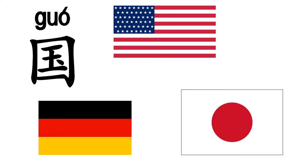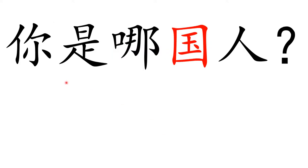国 means 'country'. Examples of countries: 美国, 德国, 日本. 你是哪国人? — here 国 is a measure word. 哪国 means 'which country?'